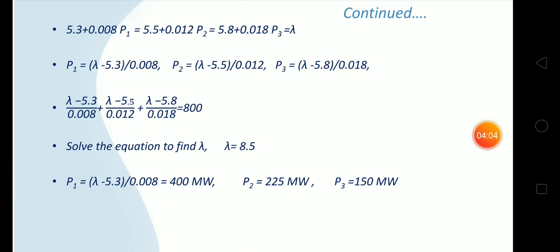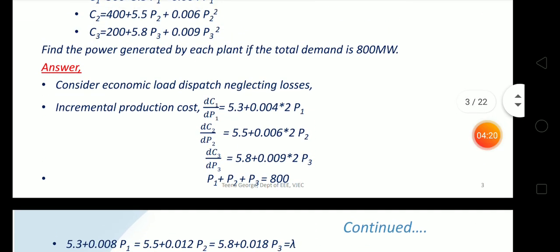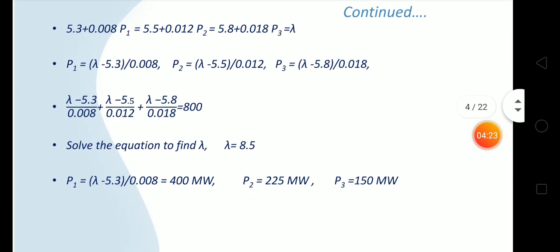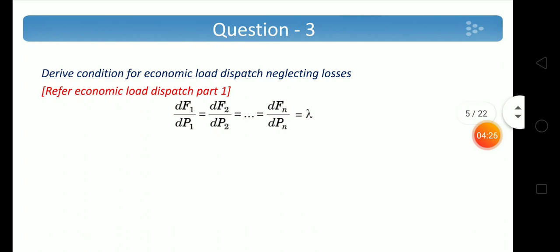P1 = (8.5 - 5.3)/0.008 = 400 MW. Similarly, P2 = 225 MW and P3 = 150 MW. This is the optimal generation of each plant to meet a load of 800 MW. Next question: Derive the condition for economic load dispatch neglecting the losses. The condition is dF1/dP1 = dF2/dP2 = ... = dFn/dPn = lambda; incremental fuel costs should be equal.